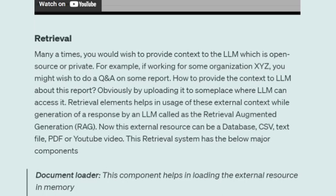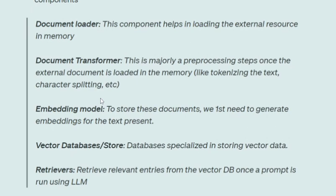The retrieval module has majorly five segments. The first is the document loader — this component helps you load the external resource, whether that is a text file, a PDF, or a YouTube video. The second is the document transformer, which is helpful in pre-processing the data that you have loaded.